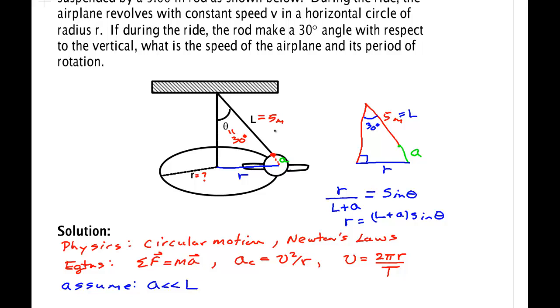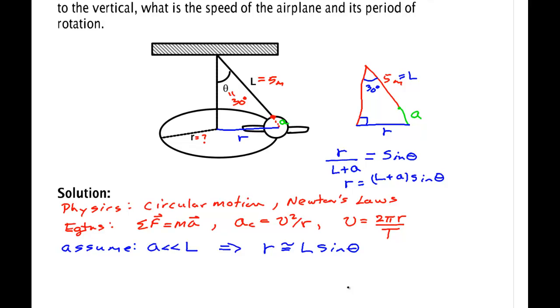Assume A is much much less than L. Now L is a 5 meter rod - if you don't have a feel for that, that's about equivalent to 5 yards or a little bit more than 15 feet. So I've seen these little rides that people sit in, and they're not 30 feet across, so they're probably quite a bit less than that. So this is probably a reasonable approximation to make. If I make that assumption, then R is approximately L sine of the angle. So I write all these things down and get ready to start trying to solve this problem.